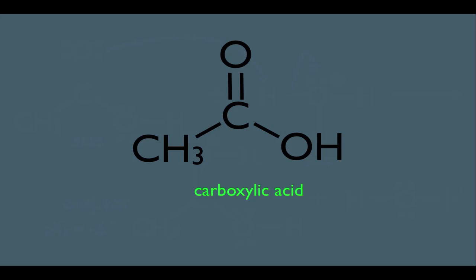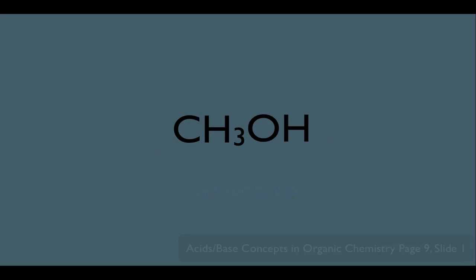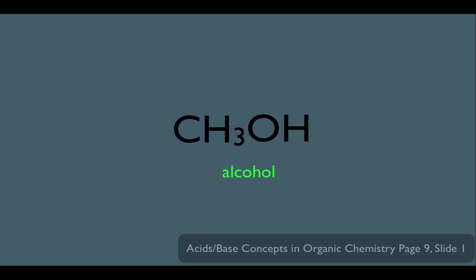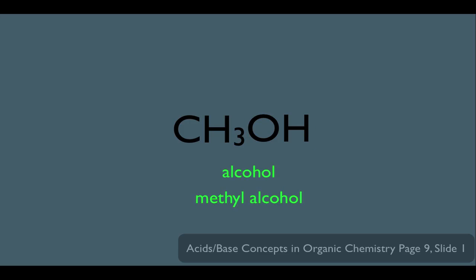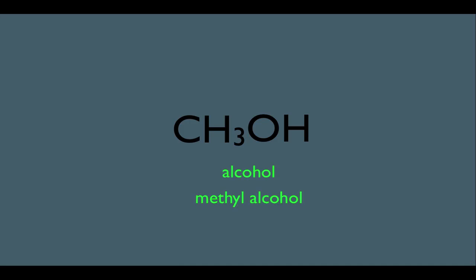Now let's look at another organic molecule — the alcohol. Alcohols always have what's called an OH group. This particular example is called methyl alcohol, and to give you an idea of how acidic alcohols are, they have a pKa of around 15.5, which means they're relatively weak acids.